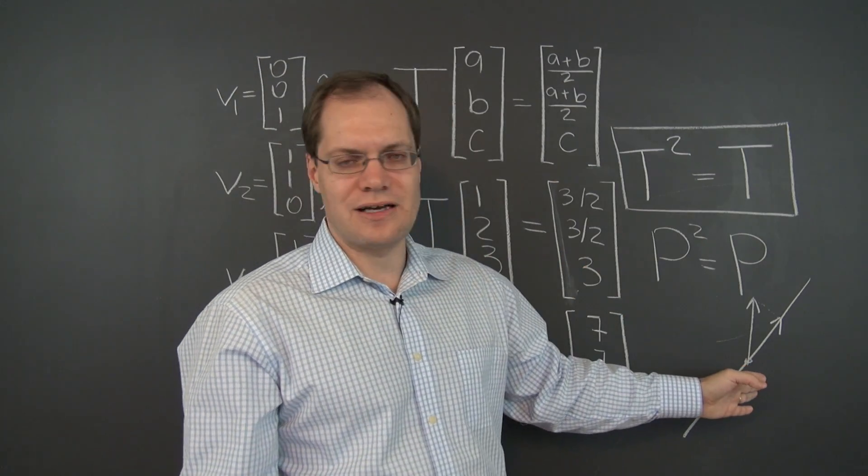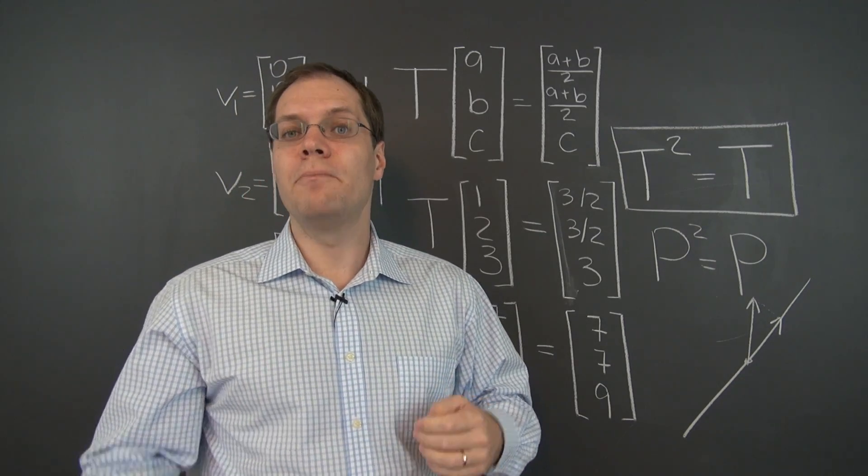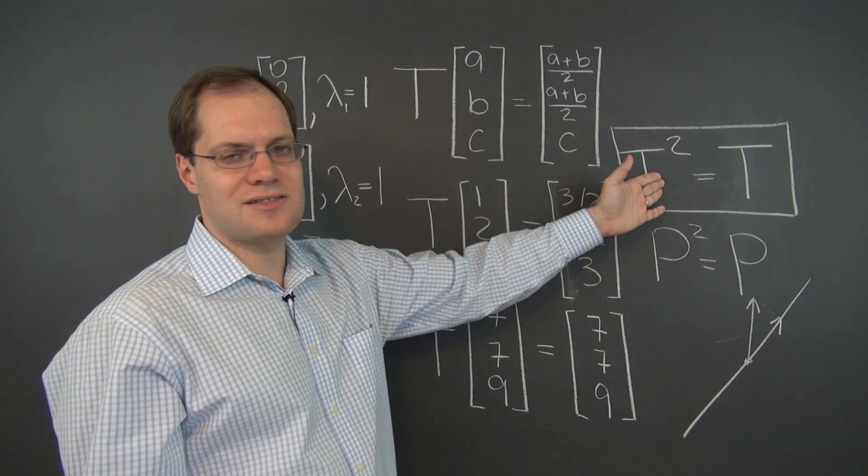Even though it's very much not like this. These are arrows. These are triplets of numbers. Couldn't be more different. But in some ways they're analogous. I see the analogy. And the analogy is this.